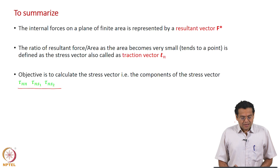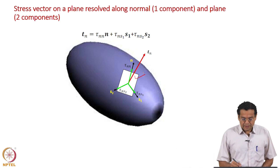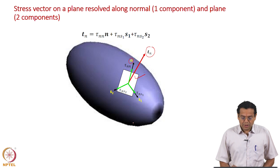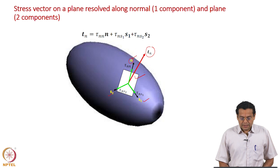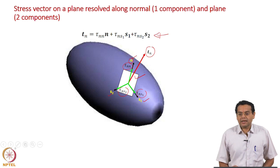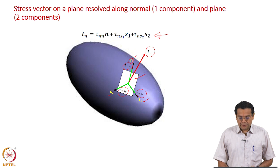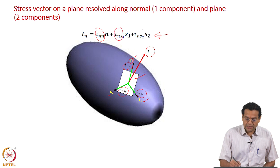I will summarize what was written pictorially. We began with a plane whose normal was n, and we had a stress vector acting on that plane. We introduced a coordinate system associated with the plane: normal to the plane and then the two directions on the surface. We resolved the stress vector along these three directions: tau_nn, tau_ns1, and tau_ns2 — one normal stress and two shear stresses.